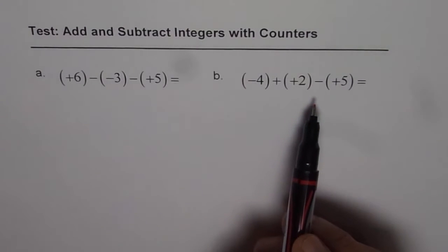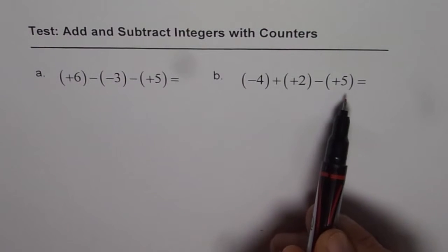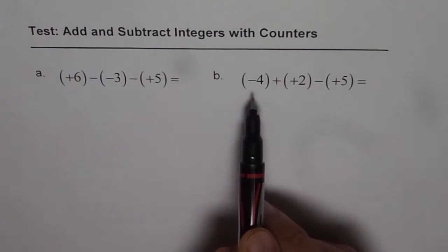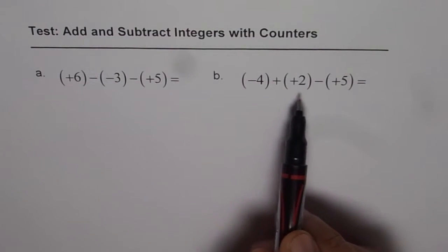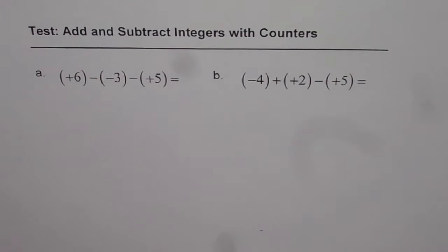And then the second one, you need to find the value of this expression which is (-4) + (+2) - (+5). You can pause the video, copy the question, answer and then look into my suggestion.